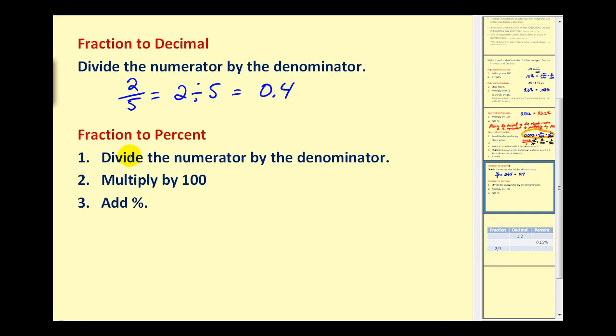And lastly, to convert a fraction to a percent, this is just a combination of two previous conversions. So if we have the fraction 7 eighths, we first convert it to a decimal by dividing, and then we multiply it by 100 and add a percent sign. Remember that multiplying by 100 would be the same as moving the decimal to the right twice, which would give us 87.5 percent.